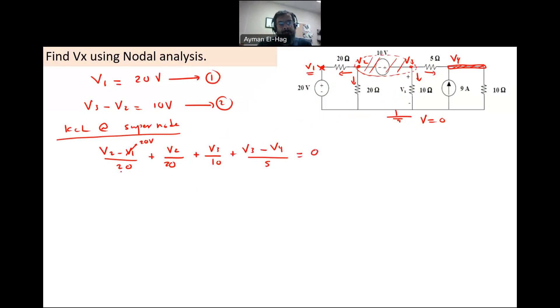So the least common denominator is 20. So I'll multiply everything times 20. So we'll have V2 minus 20 plus V2 plus 2V3 plus 4 times V3 minus V4, and this is equal to zero. Let's add terms. So we have two terms for V2, so 2V2. We have 2V3 and 4V3, so plus 6V3 minus 4V4, and we have 20. This is equal to 20. If I divide everything by 2, reduce the size of the equation, this is V2 plus 3V3 minus 2V4 equal to 10, and this is my third equation.